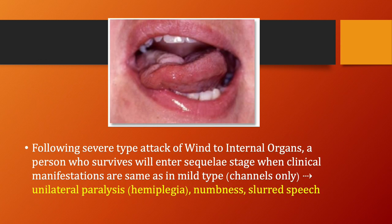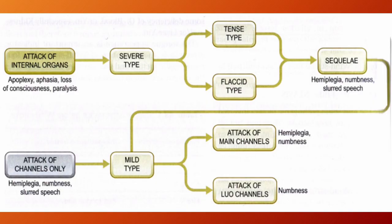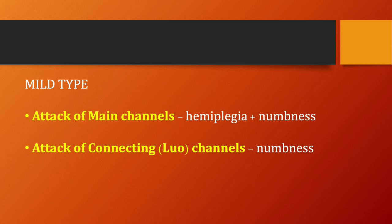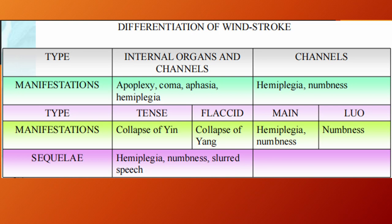Following a severe type of wind to the internal organs, a person who survives will enter the sequelae stage when the clinical manifestations are the same as in a mild type, resulting in unilateral paralysis or hemiplegia, numbness, and slurred speech. These manifestations may either arise independently from an attack of the channels alone or they may be the sequelae of an attack of the internal organs. The severe type is further divided into the tense or closed type and the flaccid or open type according to the clinical manifestations. The mild type is further divided into an attack of the main channels, characterized by hemiplegia and numbness, and an attack of the connecting channels alone, characterized only by numbness.